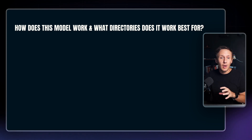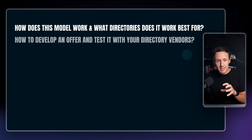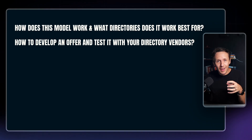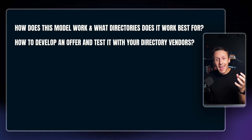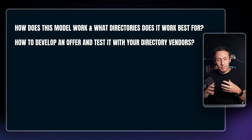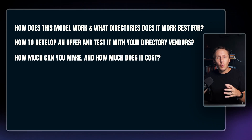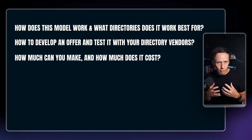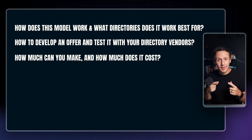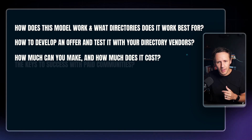So in today's video, I'm going to be going over how this model works and what kind of directories I think this model is best suited to. Then we're going to be talking about one of the things that can really make or break your community — how to develop a really good offer for your community members, and how you can actually test it with some of your vendors in your directory before you commit to the whole build. Then we're also going to be talking about how much money you can realistically make off this model and how much it costs, leading into the tools I'd recommend using.